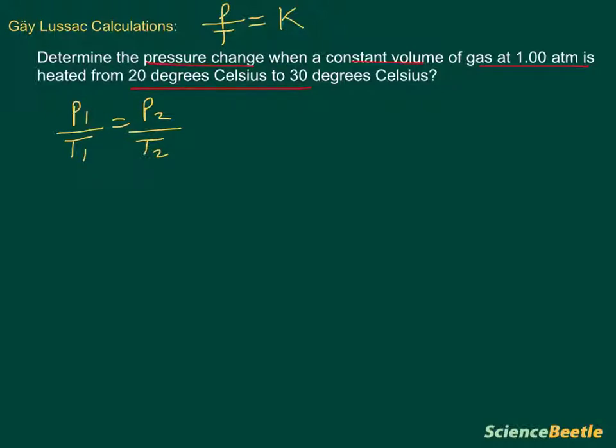If we look at this first pressure change, this here is going to be our P2 because this is something that's changing. We have constant volume, so volume doesn't really come into the equation here. Since it's constant, it doesn't really affect it one way or the other, so it's really not that important to us.